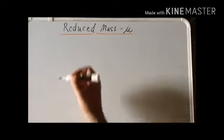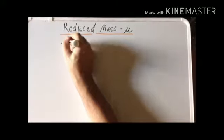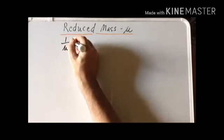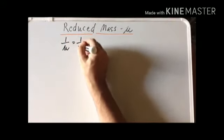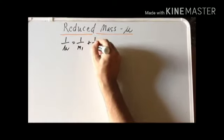By definition, the reduced mass of two particles, one over mu, is equal to one over the first mass plus one over the second mass.